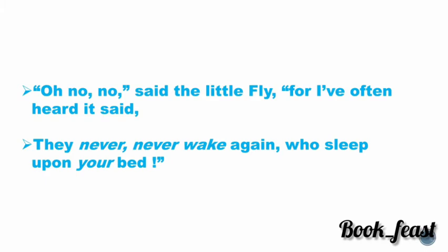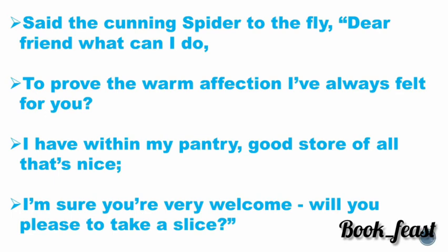Said the cunning spider to the fly: 'Dear friend, what can I do to prove the warm affection I have always felt for you?' Notice — first the spider said 'dear,' and now 'dear friend.' 'Can' talks about the capability of the spider: I can do anything for you, just tell me how to prove my friendship. 'To prove the warm affection I have always felt for you' — I have warm affection and I want to express it.